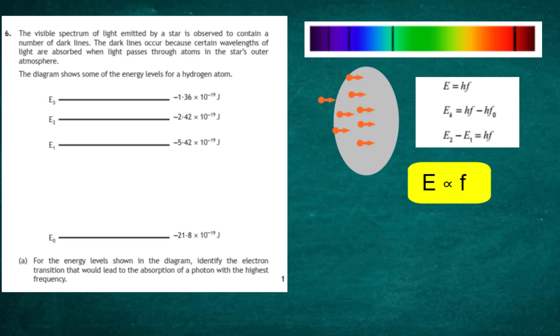Which means that the bigger the frequency of the photon, the more energy it's got. So what transition here will give rise to absorption of the highest frequency? Well, it must be a photon with the highest energy. And what that will be is the highest energy gap.